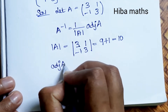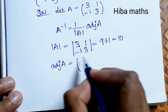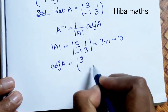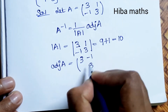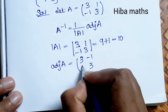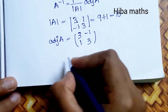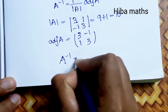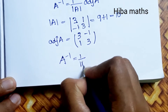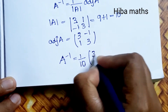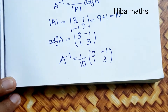For the adjoint of A, swap the diagonal elements [3, 3] and apply sign changes to off-diagonal elements. So the adjoint of A is [3, -1; 1, 3]. Therefore, A inverse = (1/10) × [3, -1; 1, 3].